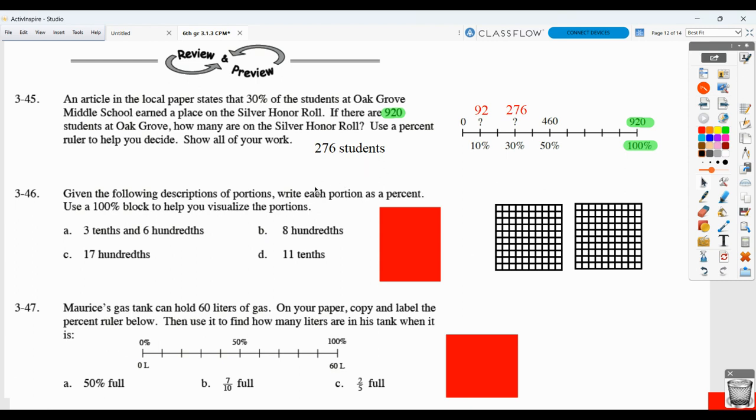Here they want you to write each portion as a percent and use the 100% block to help you visualize. So 3 tenths and 6 hundredths. Remember, a tenth is basically a column or a row. So 3 tenths would be three columns. And then 6 hundredths, each hundredth is a small little square. So that would be one way to show 3 tenths and 6 hundredths. Basically, if you count them up, 36 hundredths.